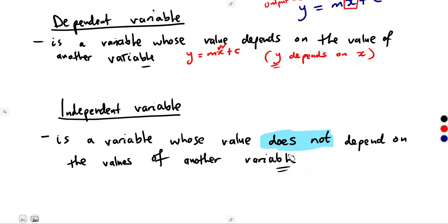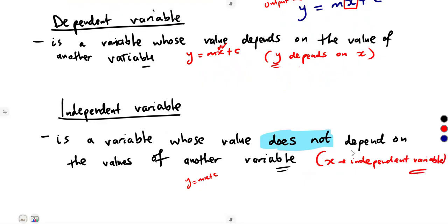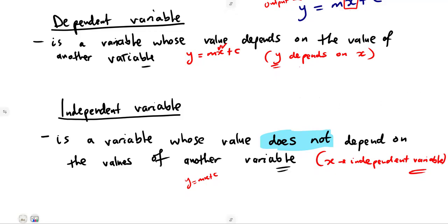So x becomes the independent variable. When we are given y equal to mx or whatever equation written in terms of x, x will be the independent variable. Remember, input is a choice — you choose to say let me take from minus one up to three. It is not like the output; you do not decide what the output will be. The output is always as a result of the input — it depends on the input.